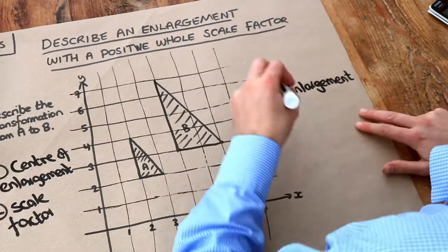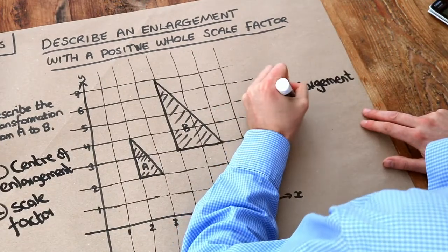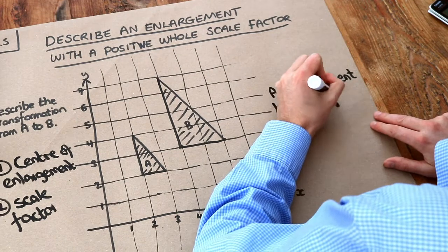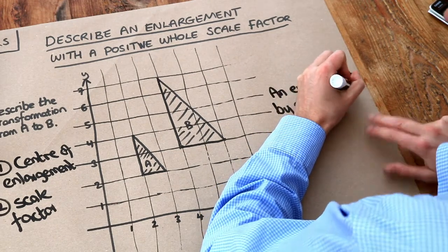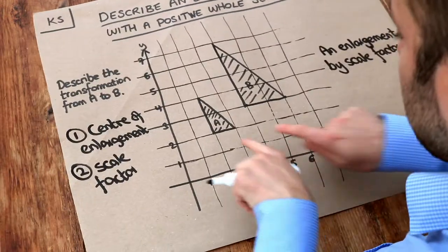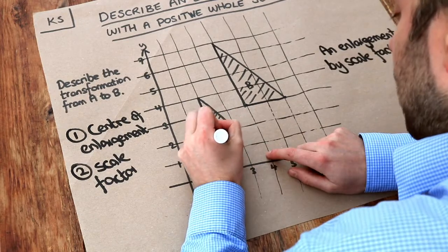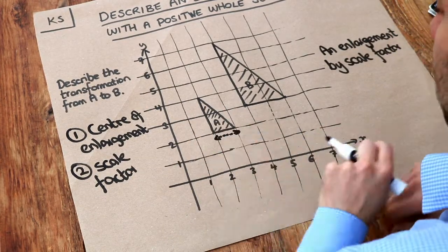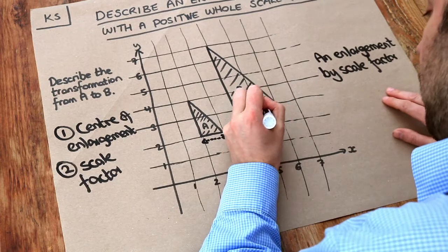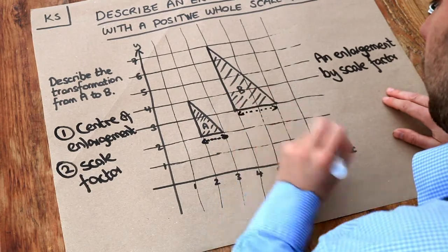Let's say what the scale factor is first. So it's by scale factor. And how do we work out the scale factor? Well how many times bigger is it getting? Well let's just look at the width. Can you see that the width of this shape is one square? One unit. Whereas the width of this shape is two units.